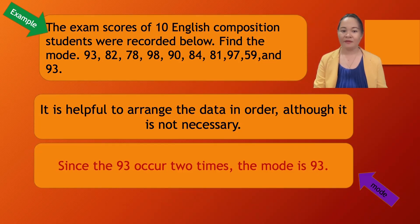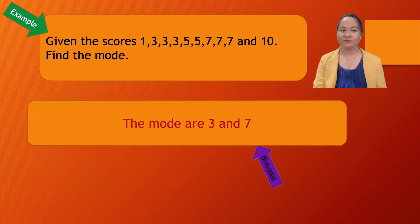That is unimodal—one mode. Another example: given the scores 1, 3, 3, 3, 5, 5, 7, 7, 7, and 10, find the mode. Since 3 and 7 occur 3 times each, the modes are 3 and 7.